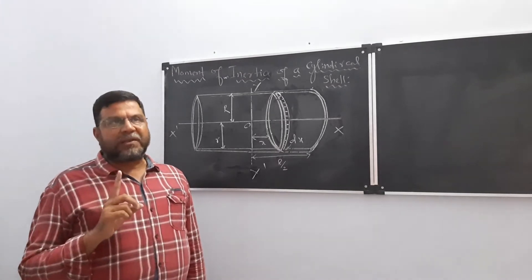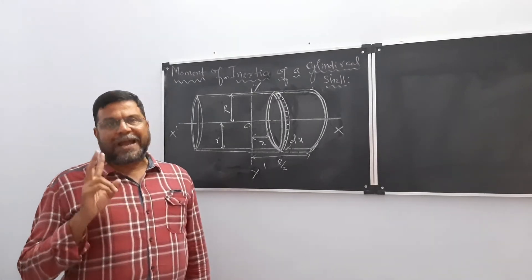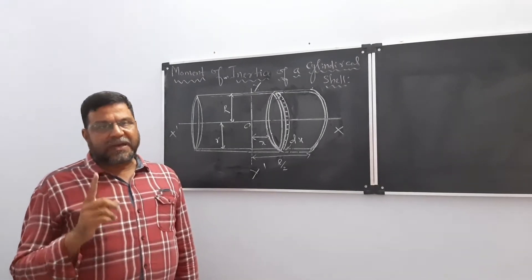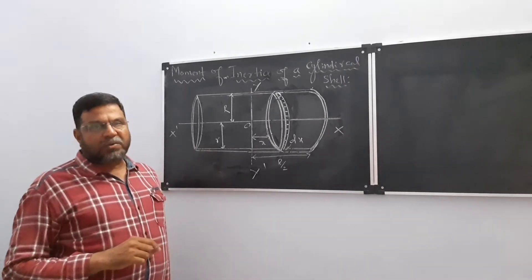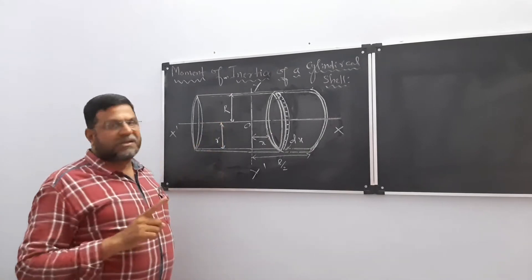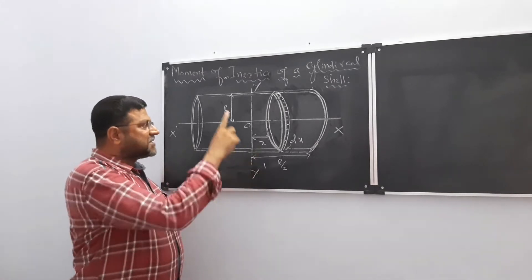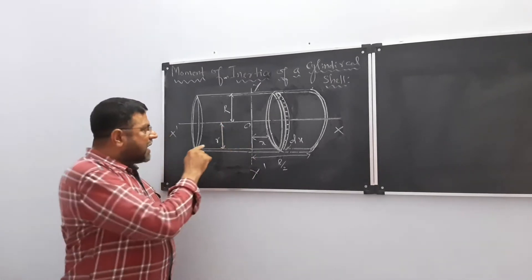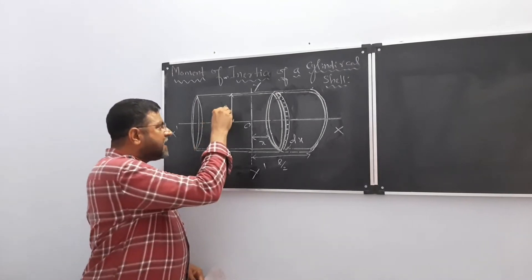You should remember one thing: whenever you are taking an object in the form of a shell, it will have two radii — one is the inner radius and another is the outer radius. The inner radius is marked as small r and the outer radius is marked as capital R. We are considering the cylindrical shell on two axes, x-x' and y-y', and let O be the center.